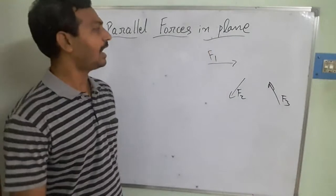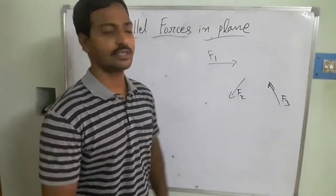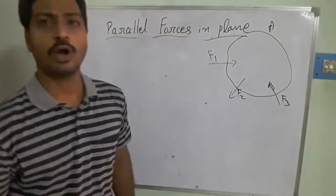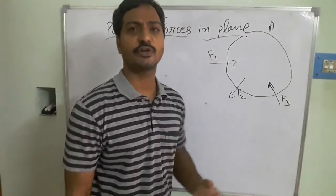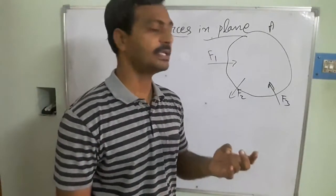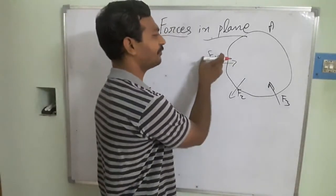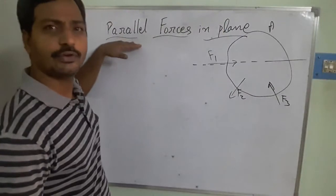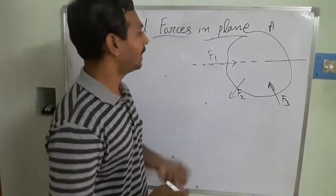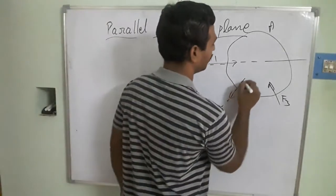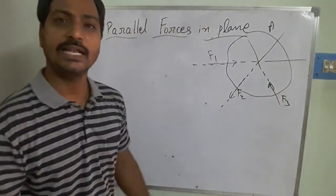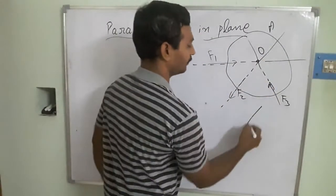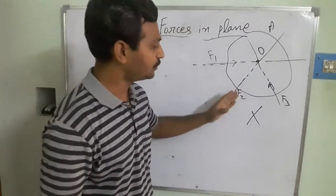I have taken three forces F1, F2, and F3 acting on a body. A force consists of magnitude, direction, and line of action. When I extend F1, F2, and F3 in their respective directions, they intersect at a point. Therefore these are not parallel forces — they are concurrent forces, which we solved in the last video lectures.